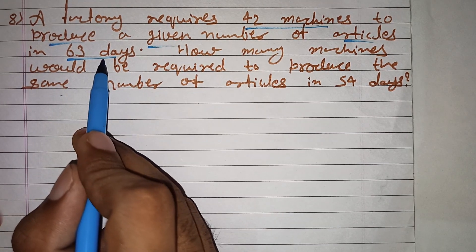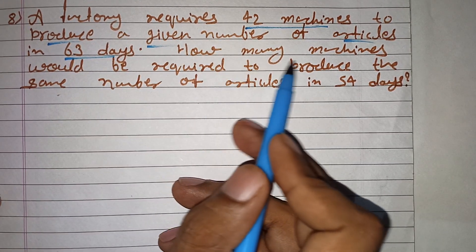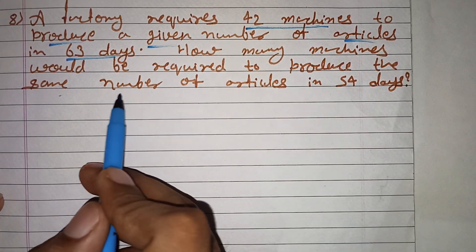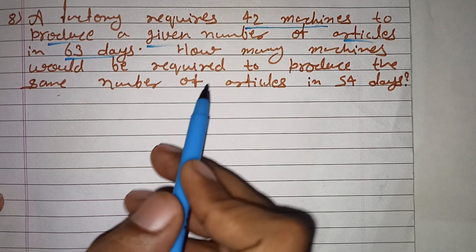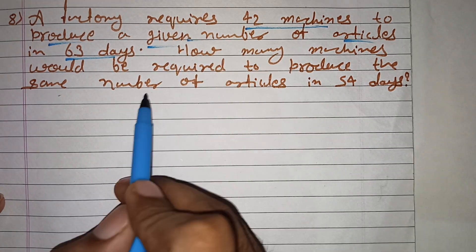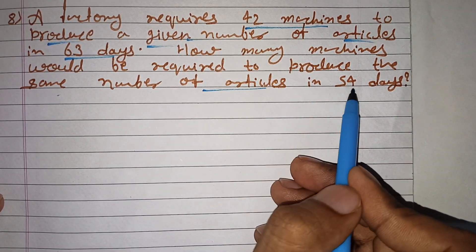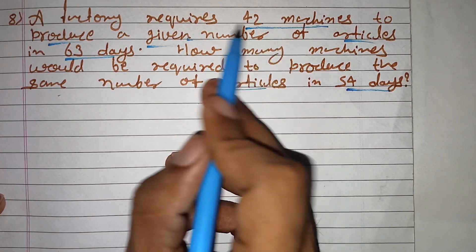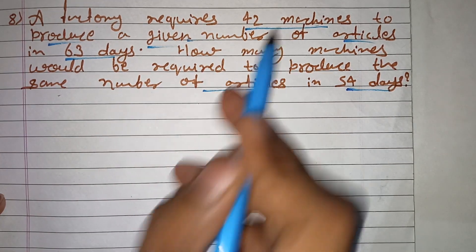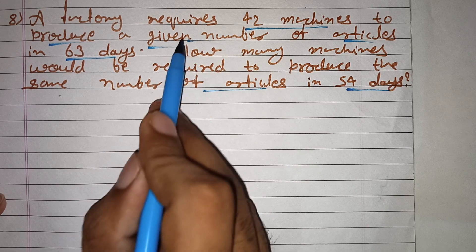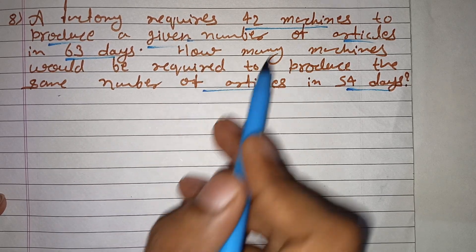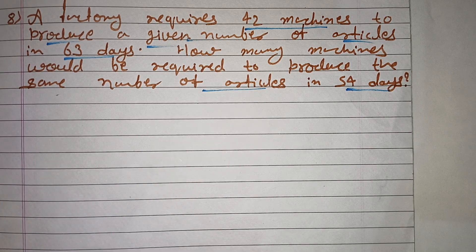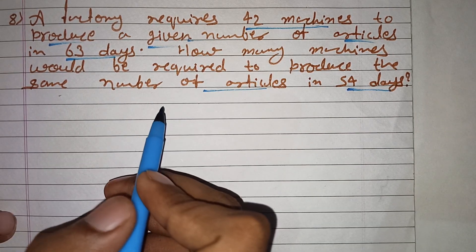वो 63 days में बन रहा है। So how many machines would be required to produce the same number of articles in 54 days? Articles वही रहेंगे, machines बदलेंगी। तो हमें machines ढूंढनी है।